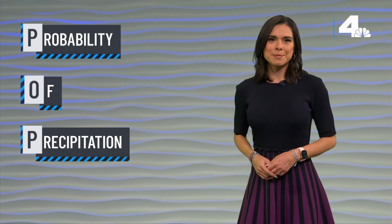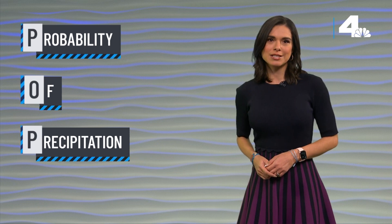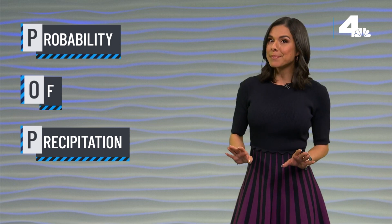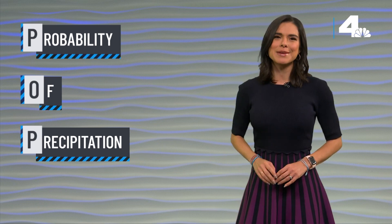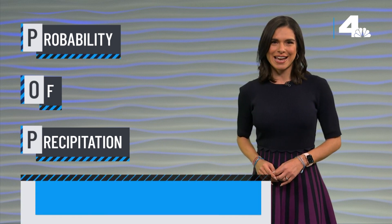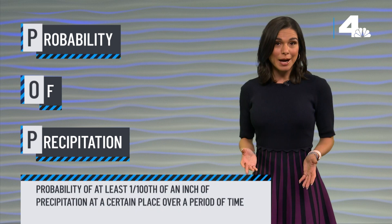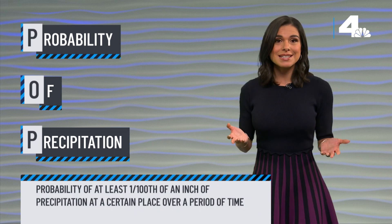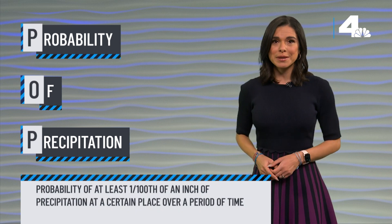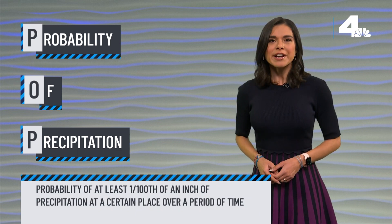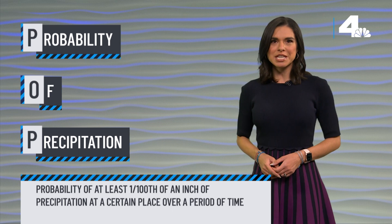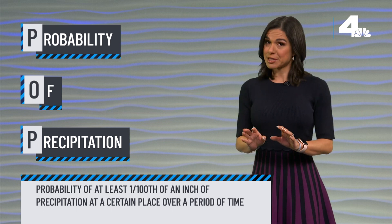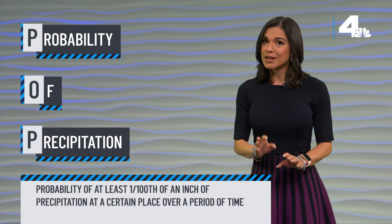The probability of precipitation forecast, or POP, is one of the least understood elements of the weather forecast. POP is simply a statistical probability of one hundredth of an inch or more of precipitation at a particular point over a certain period of time.